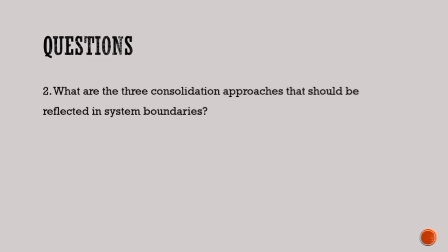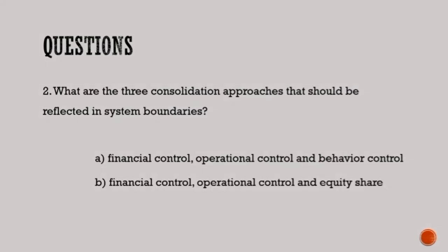Question 2: What are the three consolidation approaches that should be reflected in system boundaries? A. Financial control, operational control, and behavior control. B. Financial control, operational control, and equity share. C. Operational control, control review and equity share. Are you ready? The answer is B. Are you correct? Do you all get them right?